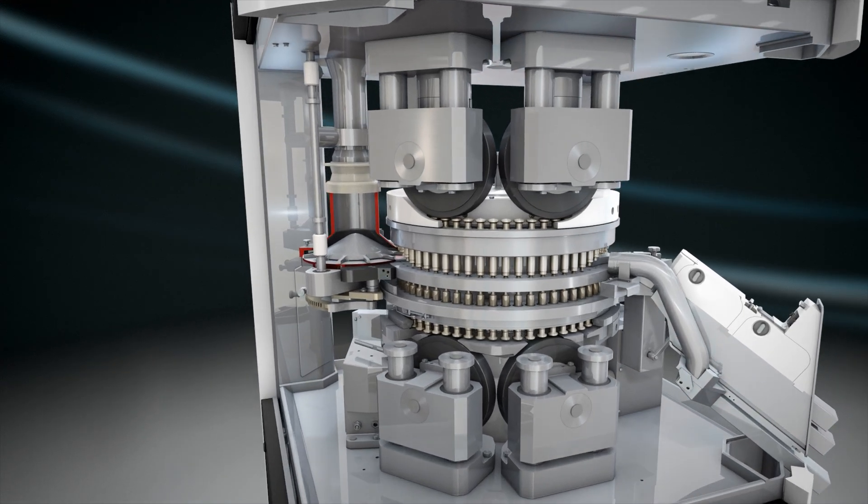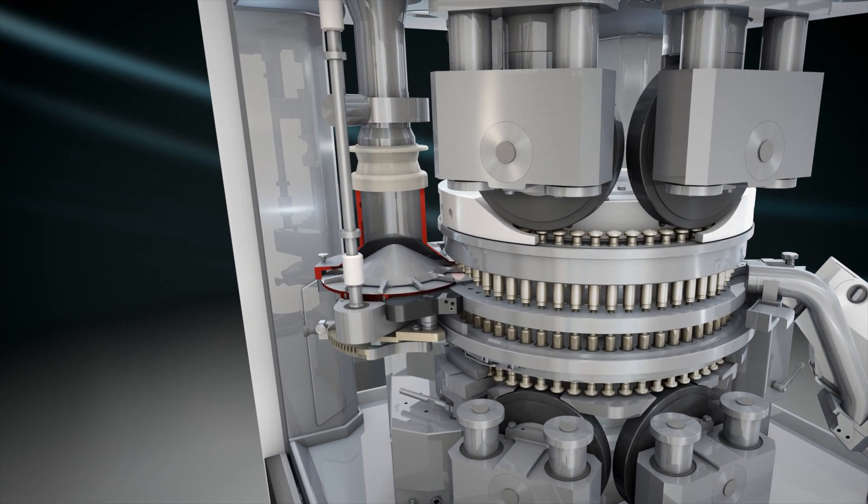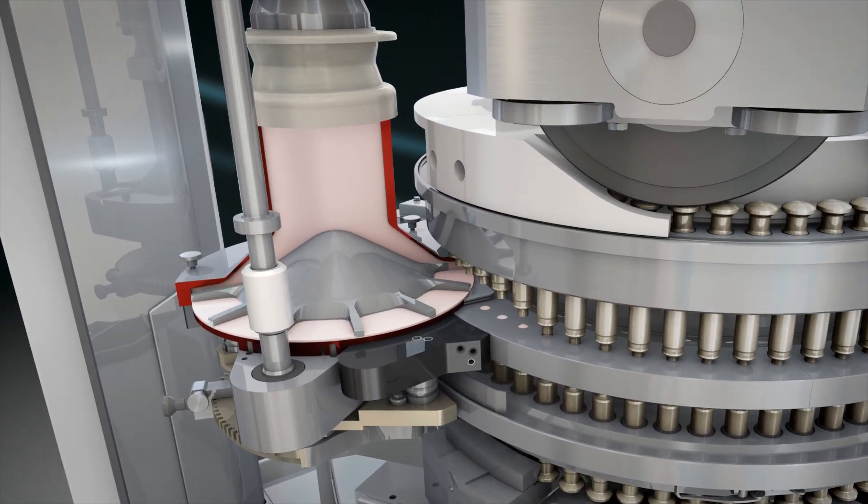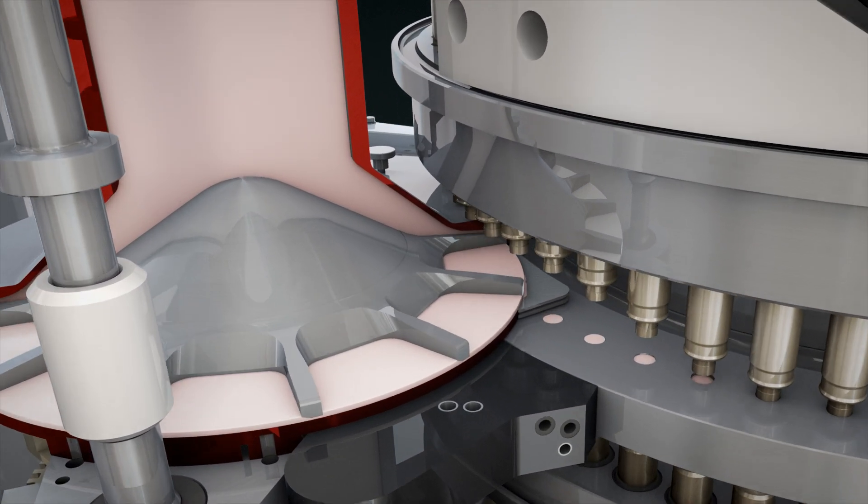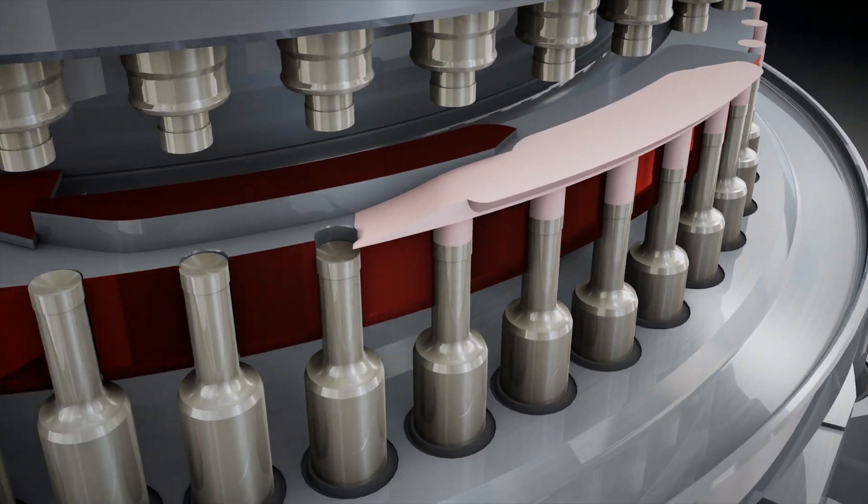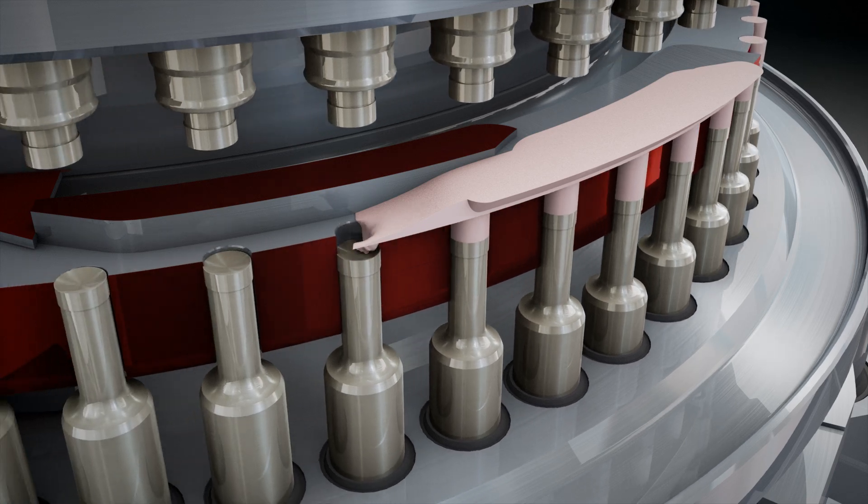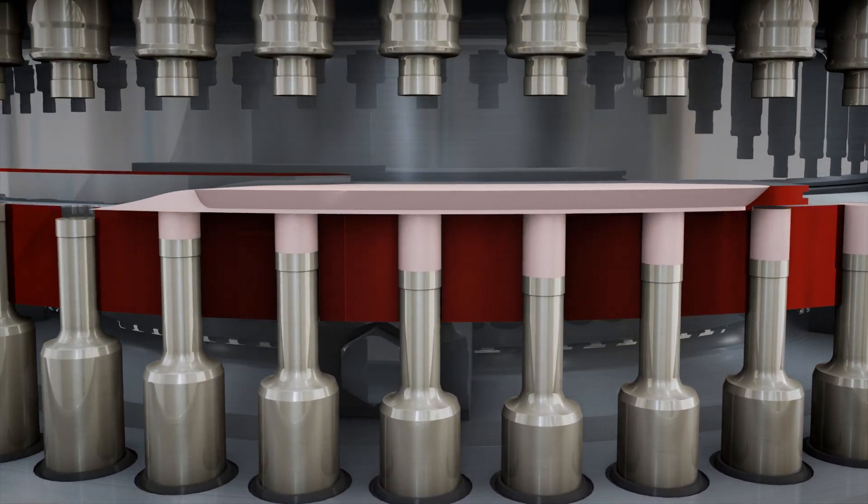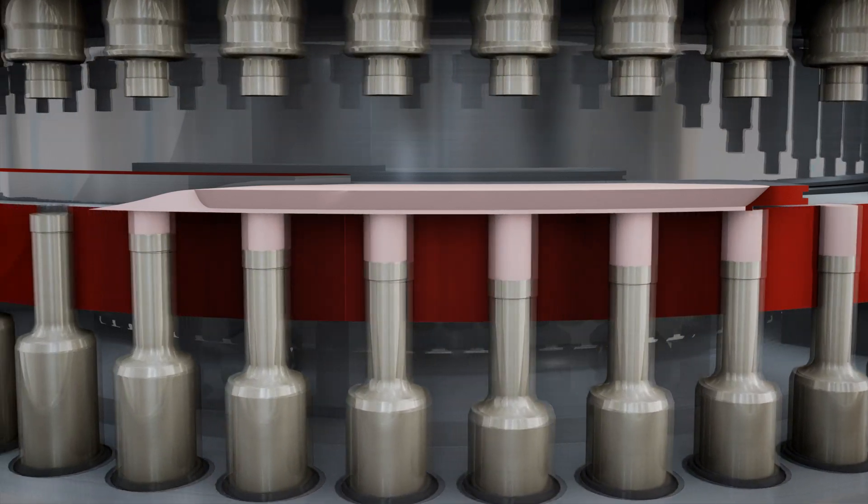The tableting process starts with filling the material which is to be compressed. The material flows through the hopper into the filling device, where it is led by the filling cone wheel into the segment bore openings. The filling is achieved by the lower punches moving down in the fill cam so that enough material can fill in the void.